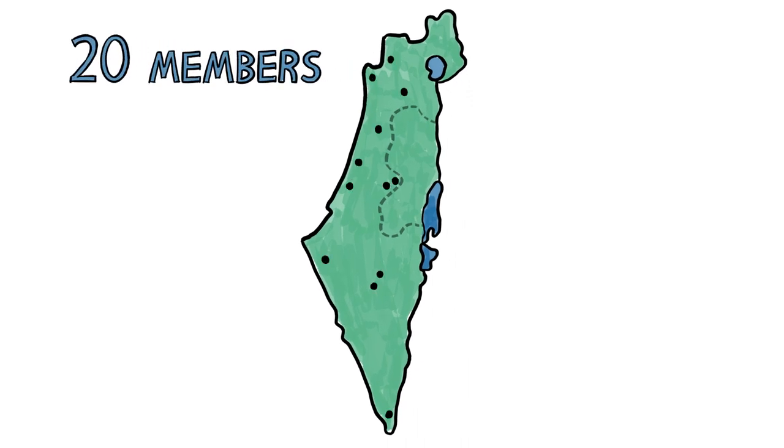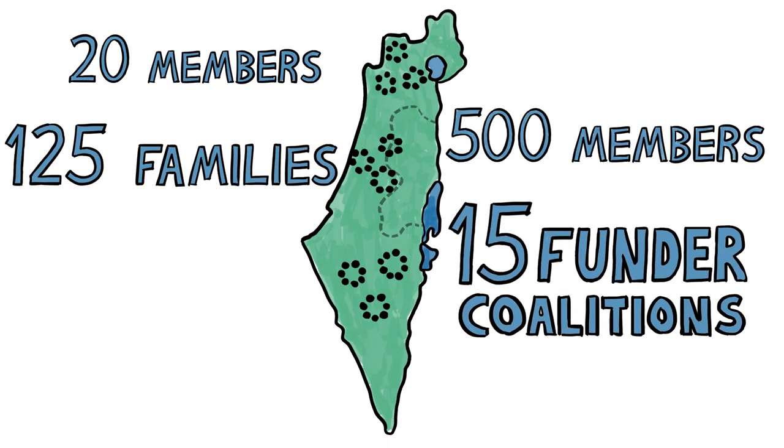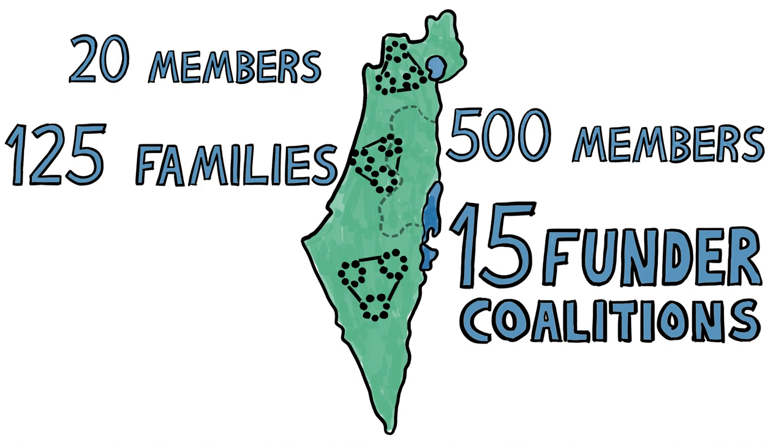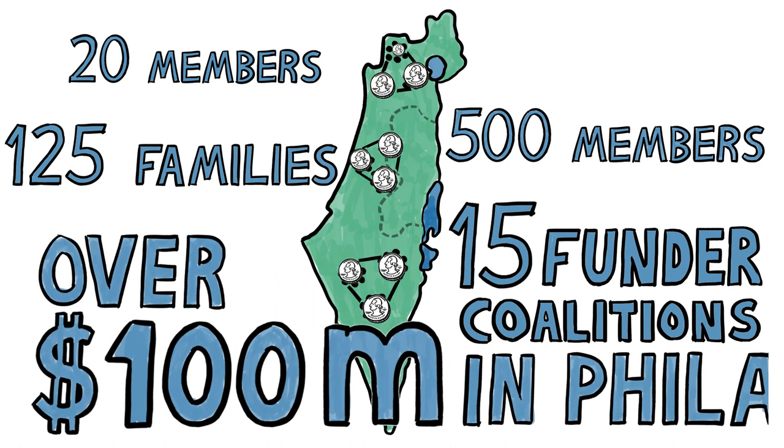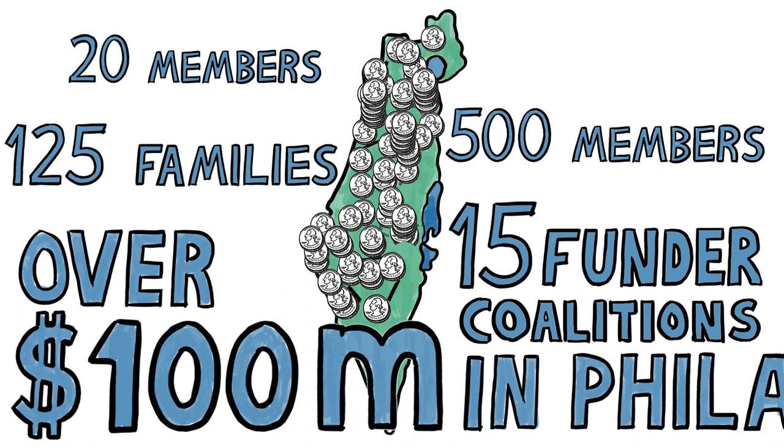JFN's Israeli network grew from 20 to 500 members in 125 families. Fifteen funder coalitions and counting are facilitated by JFN. Matching grants have generated over $100 million in new philanthropic funds internationally.